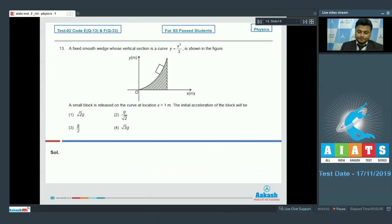Moving on to the next, that is 13 number. Here is question number 13. A fixed smooth wedge whose vertical section is a curve y equals x cube by 3 is shown in figure. A small block is released on the curve at location x equal to 1 meter. The initial acceleration of the block will be what?